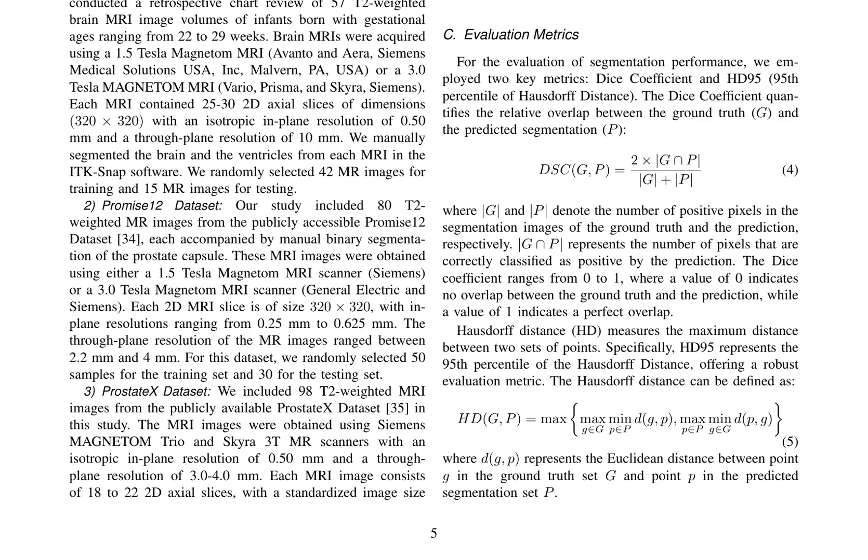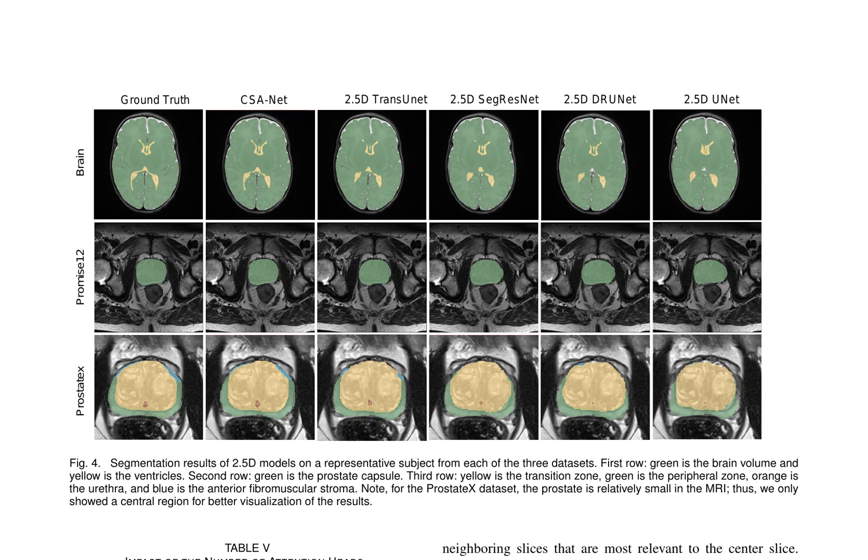The results show that CSA-NET outperforms all competing methods in segmentation tasks, achieving superior performance in terms of Dice coefficients and Hausdorff distances. The 2.5D models consistently outperform their 2D counterparts, highlighting the benefits of leveraging inter-slice correlations in 2.5D segmentation tasks.